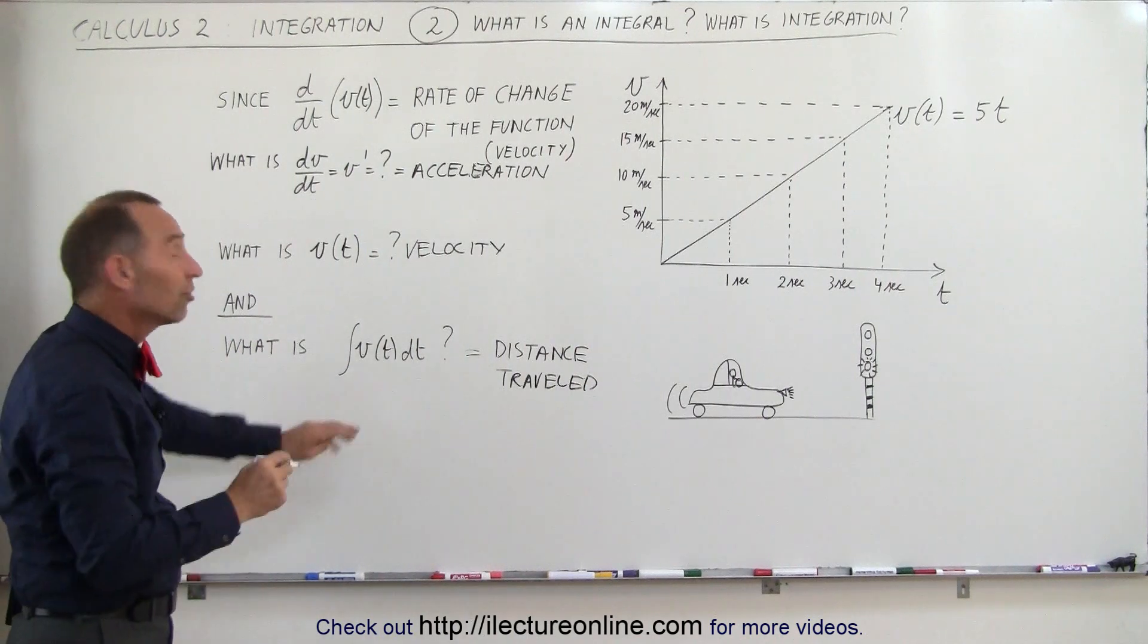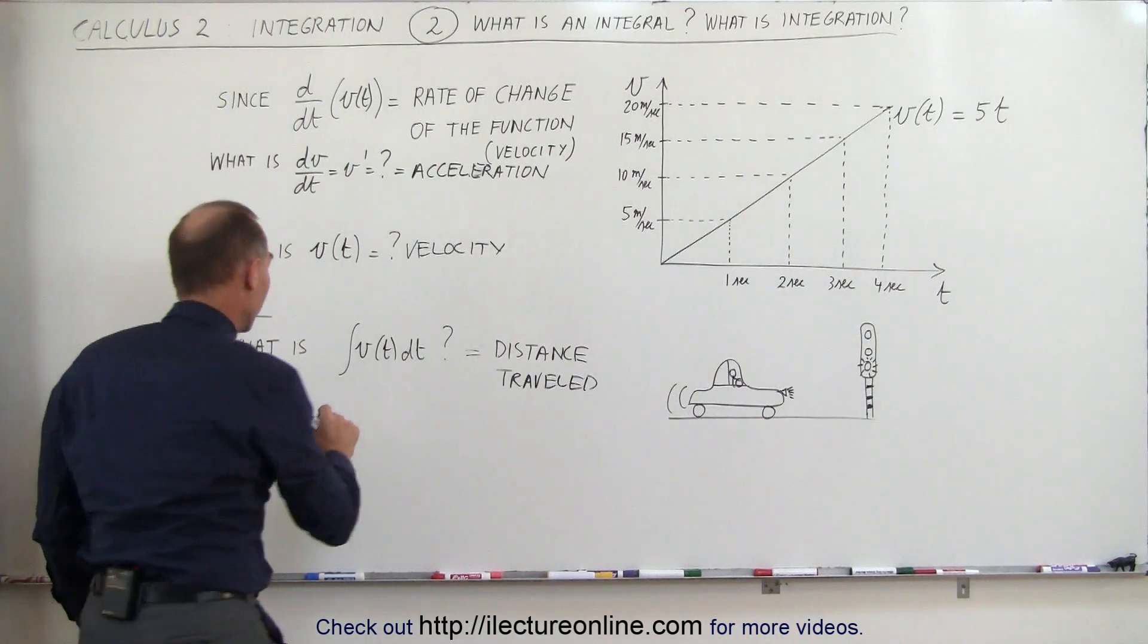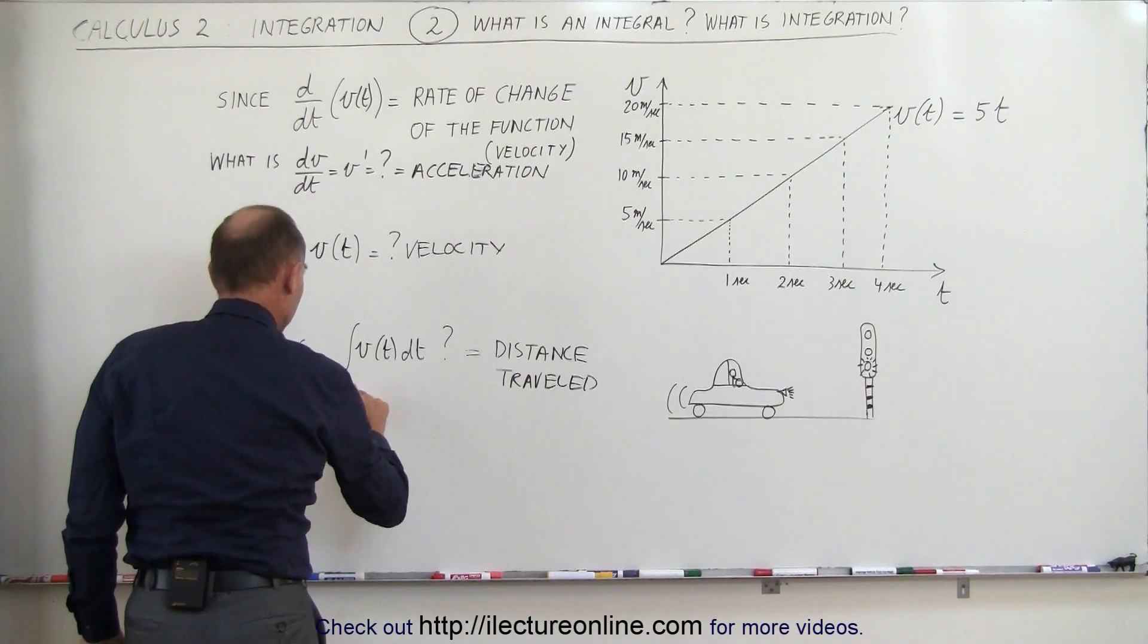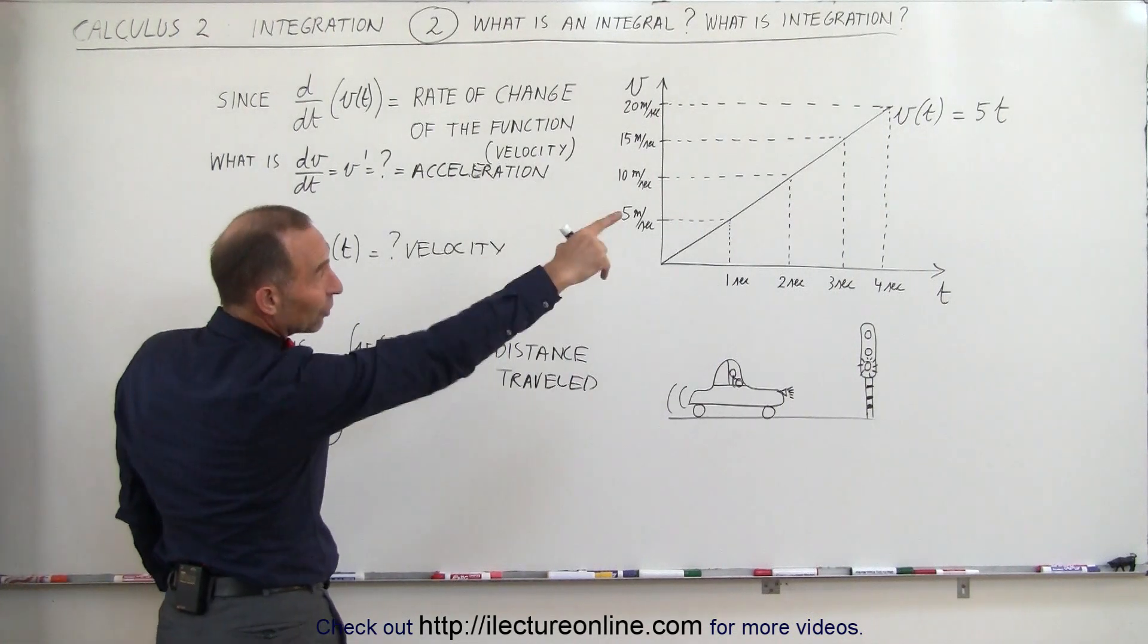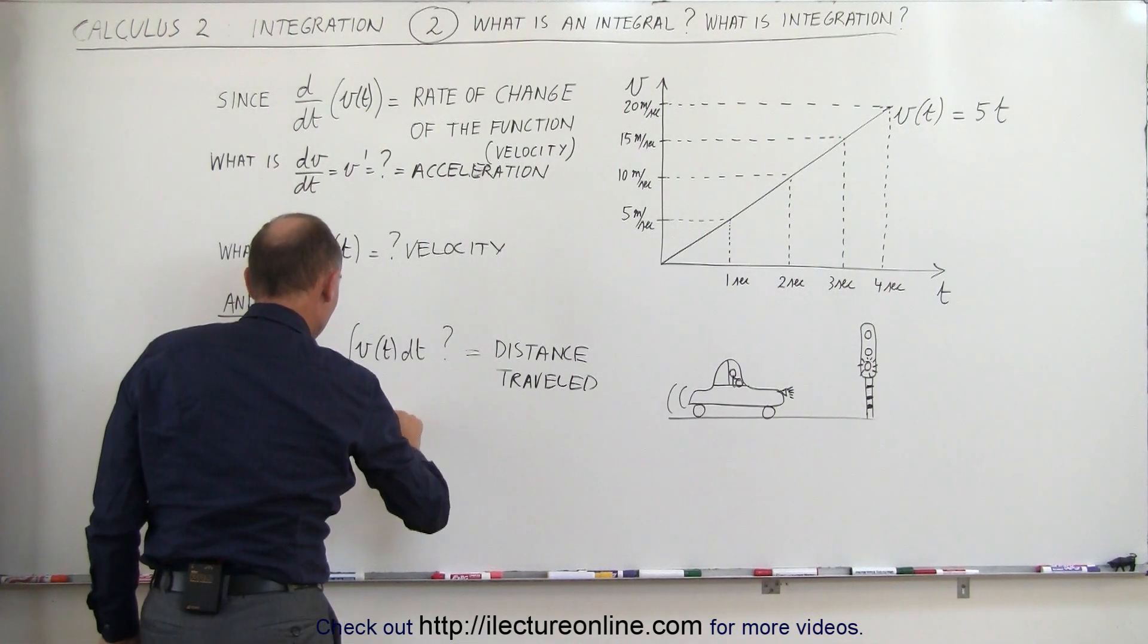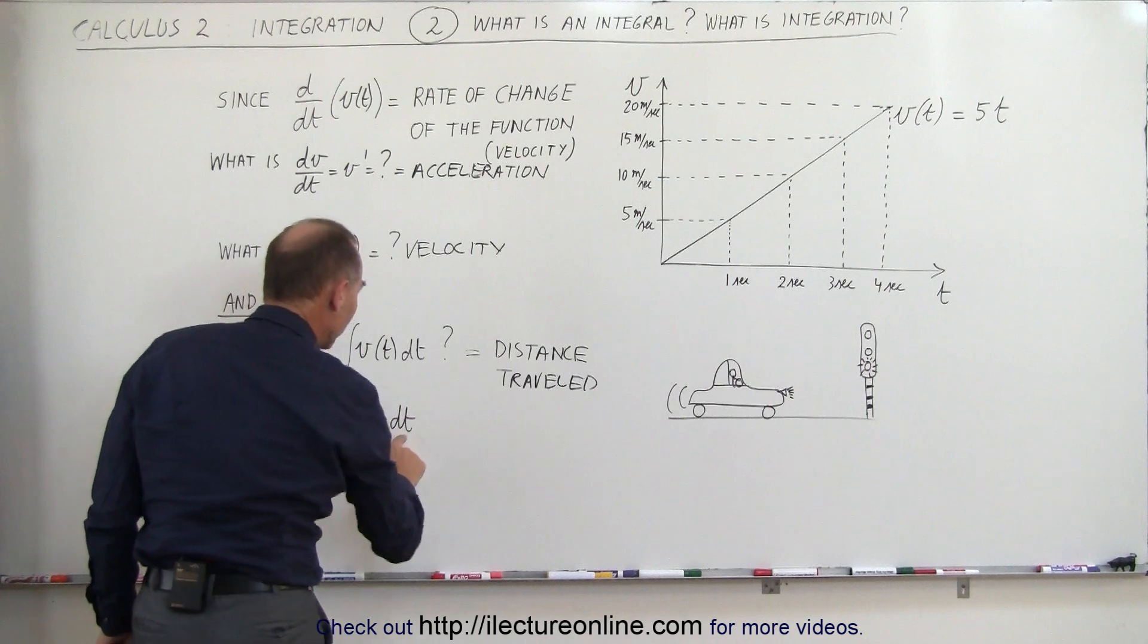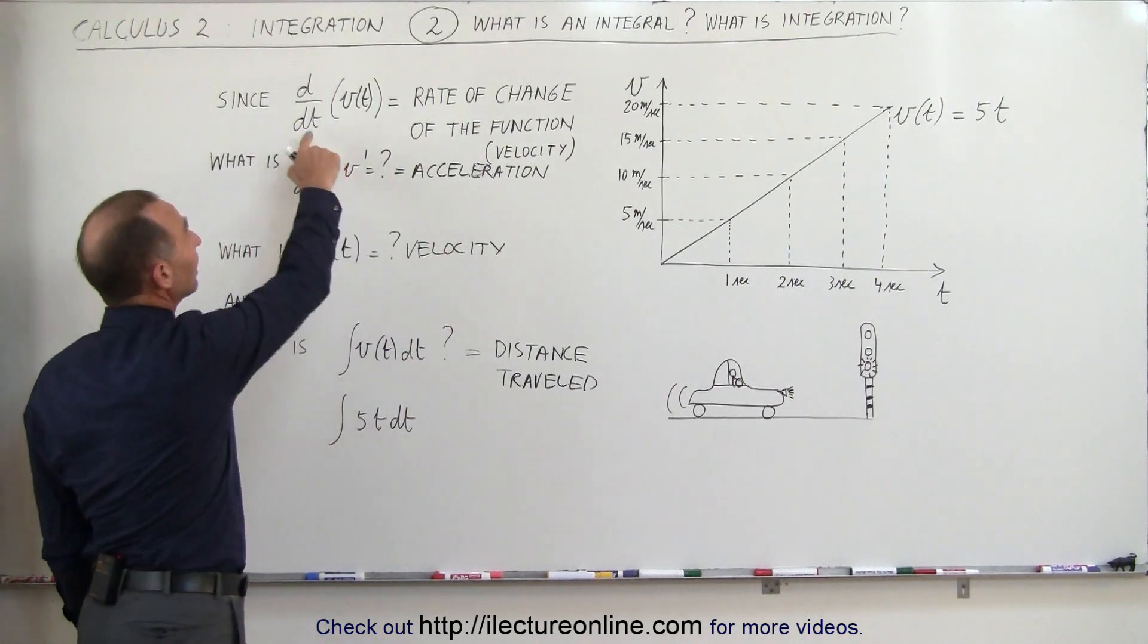Now, let's go ahead and take the integral of that function. The integral would be the integral of the function, which is 5 times t. So, 5t dt. And again, we have to have this dt there, because that came from the derivative.